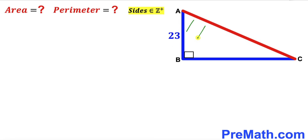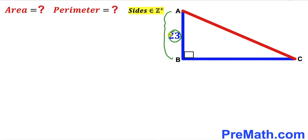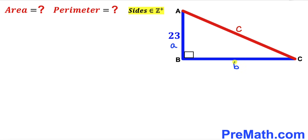Let's focus on this right triangle ABC. Since we need to calculate the area and the perimeter, and only one side length is known, we need to find the unknown sides. I'm going to label the hypotenuse as lowercase c, the known side AB as lowercase a, and the unknown side BC as lowercase b. Bear in mind that b and c are positive integers.